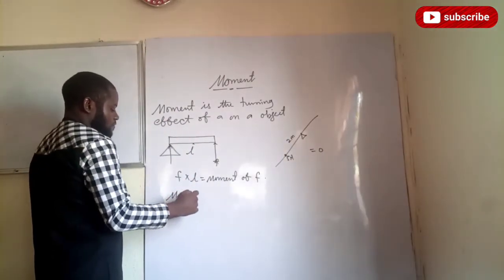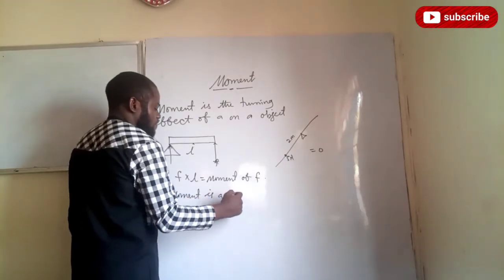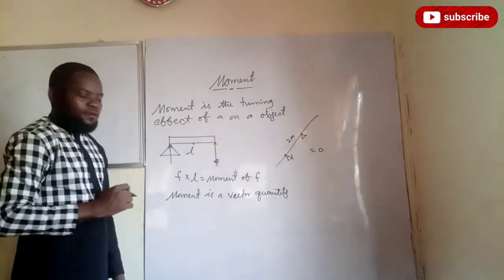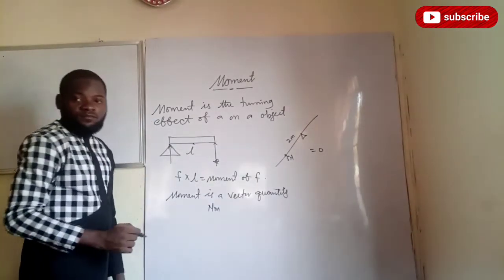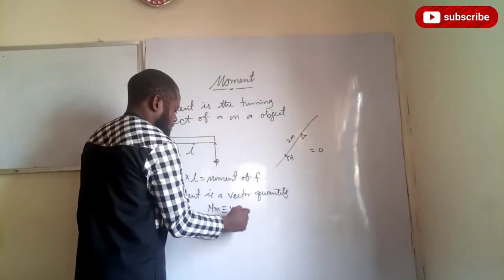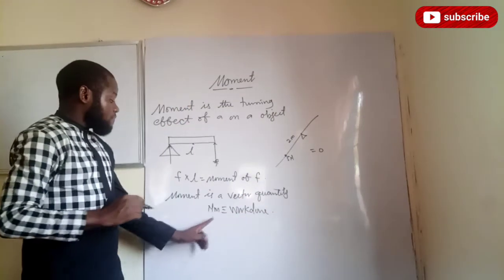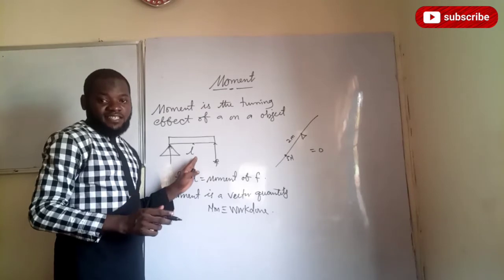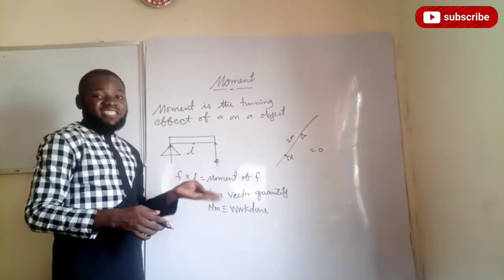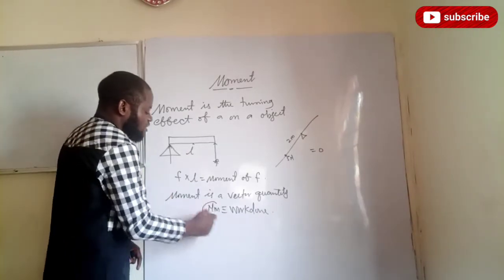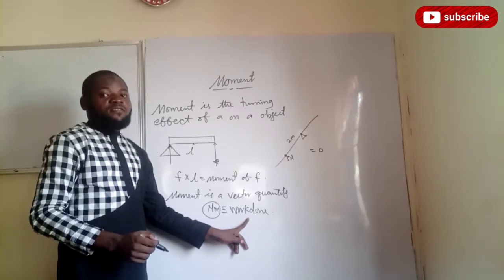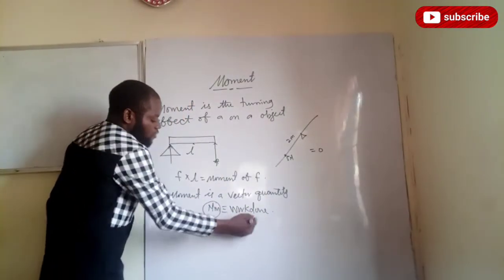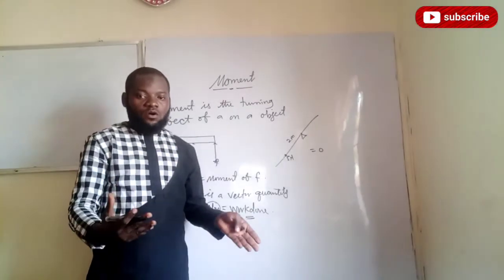Moment is a vector quantity, and it is measured in newton metres. It is equivalent to work done, because work done is also force times distance. Likewise, moment is also force times distance. The difference is that in moment, it must be a perpendicular distance. That is, moment has direction, but work done does not. That is the difference between them, and that is why they are dimensionally equal.